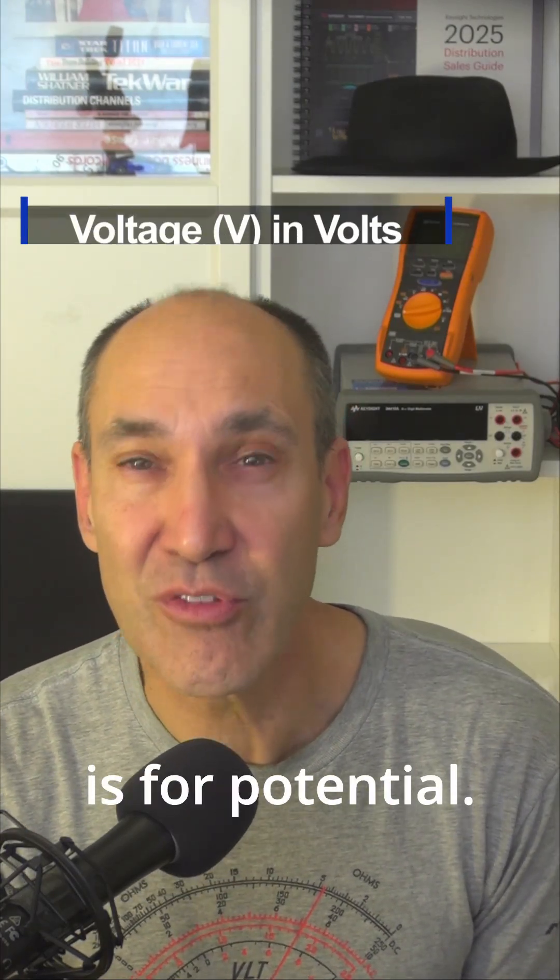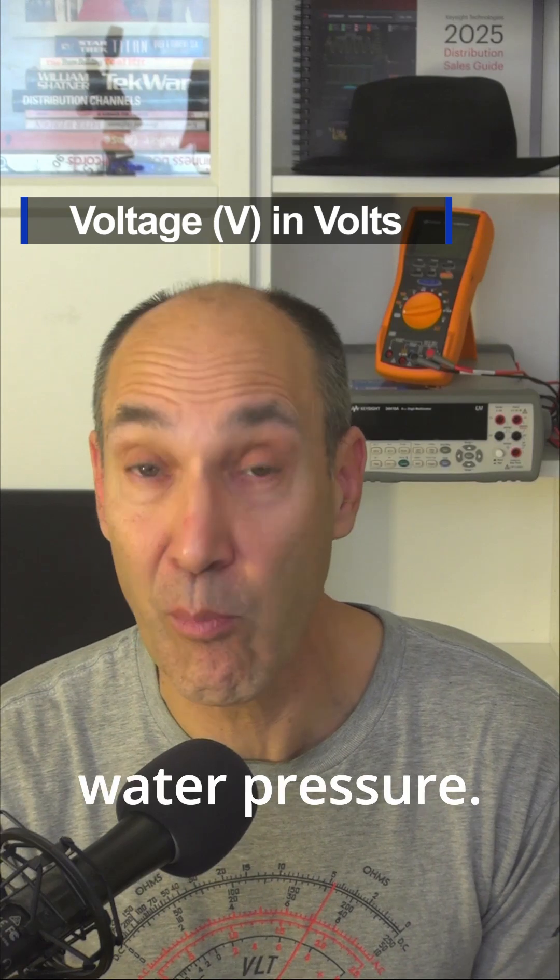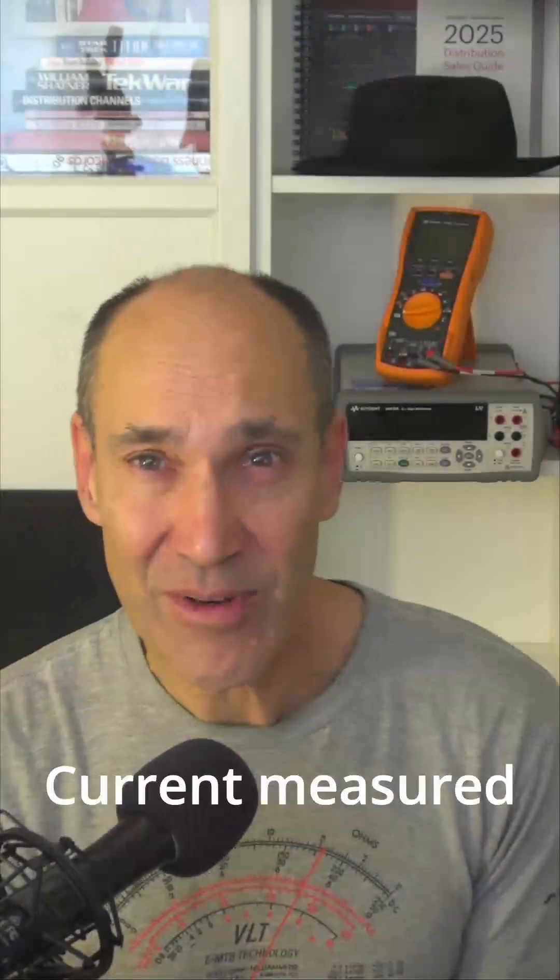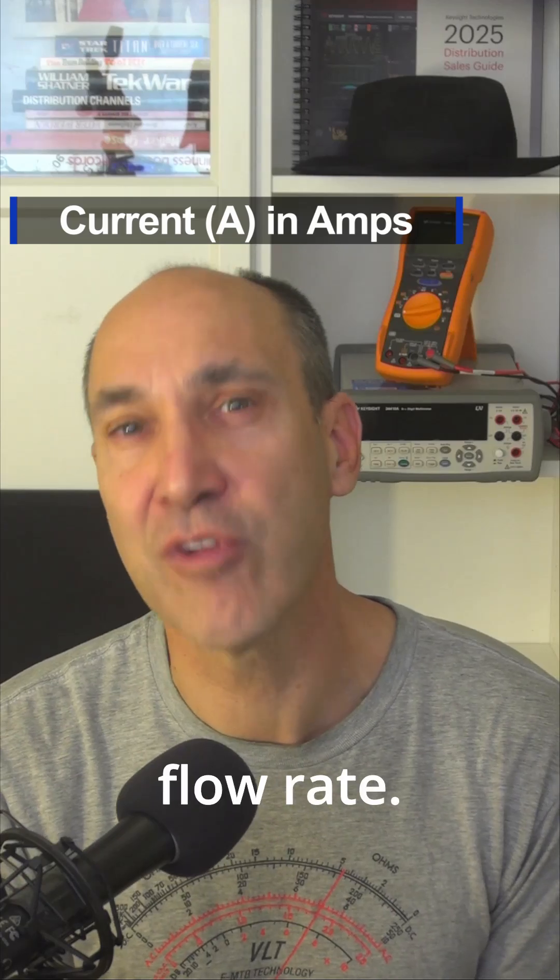Voltage in volts is for potential. Think of it like water pressure. The more pressure, the higher a fountain can get. Current measured in amps is like flow rate. A bigger pipe can pass more water or current.